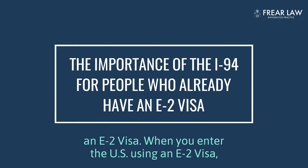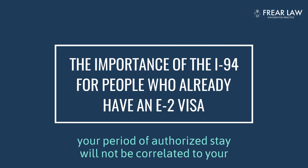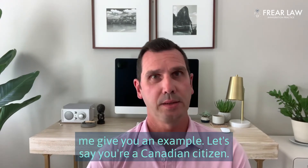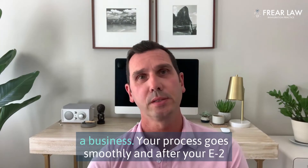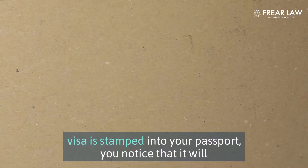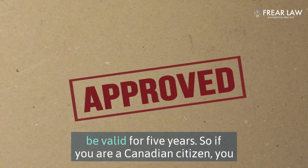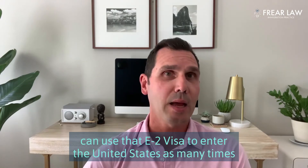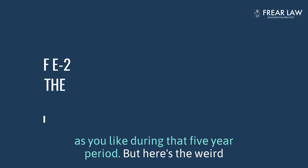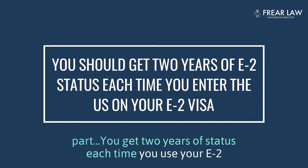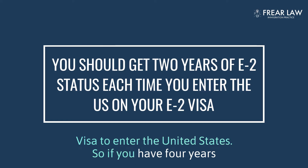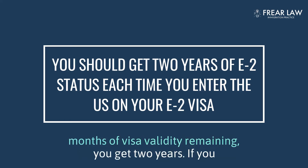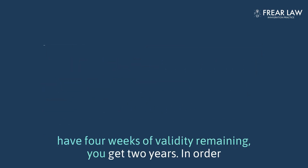When you enter the U.S. using an E-2 visa, your period of authorized stay will not be correlated to your E-2 visa validity period. For example, let's say you're a Canadian citizen who has moved to Florida or Texas to start a business. After your E-2 visa is stamped into your passport, you notice it will be valid for five years. You can use that visa to enter the United States as many times as you like during that five-year period. But here's the weird part: you get two years of status each time you use your E-2 visa to enter. So whether you have four years of visa validity remaining, four months, or four weeks, you still get two years of status.